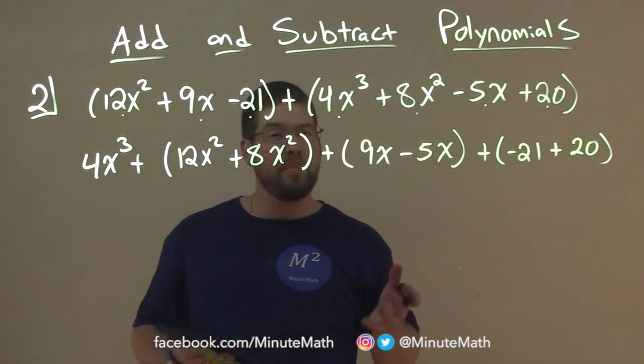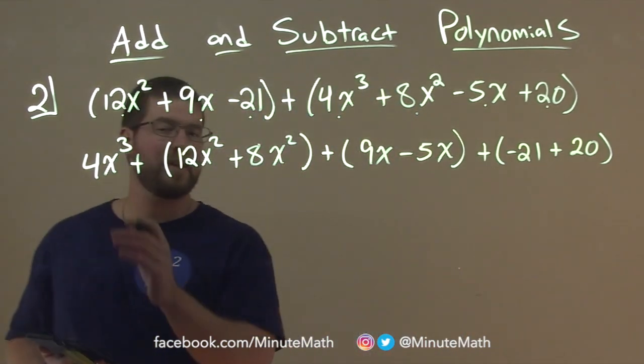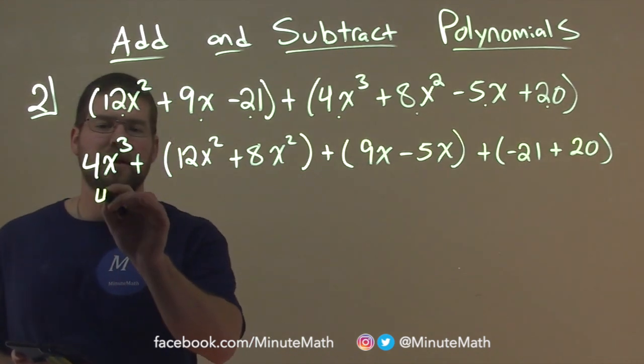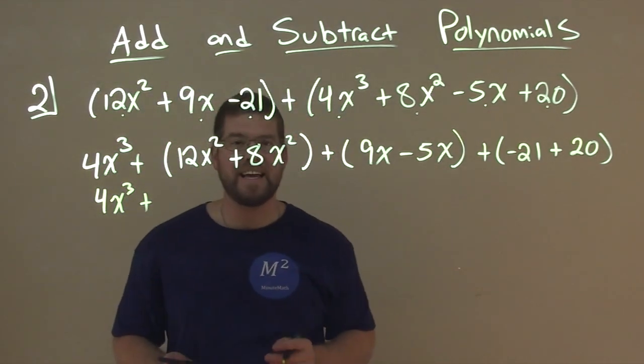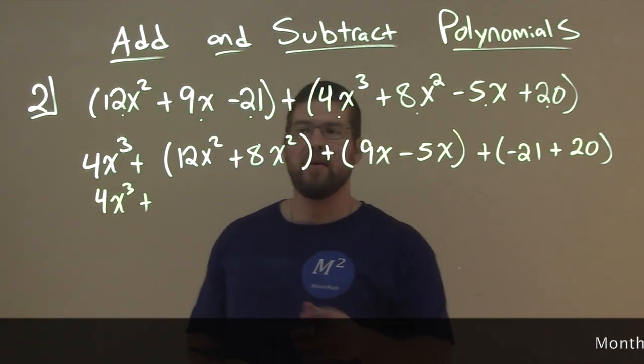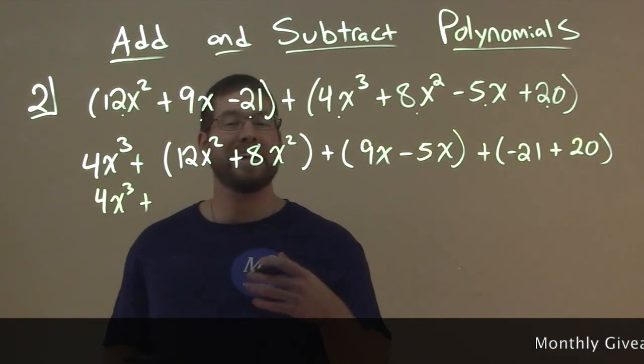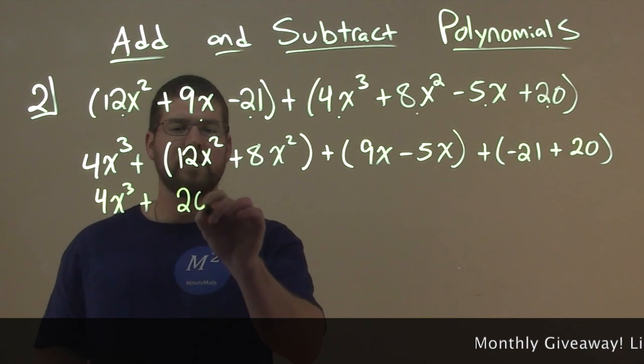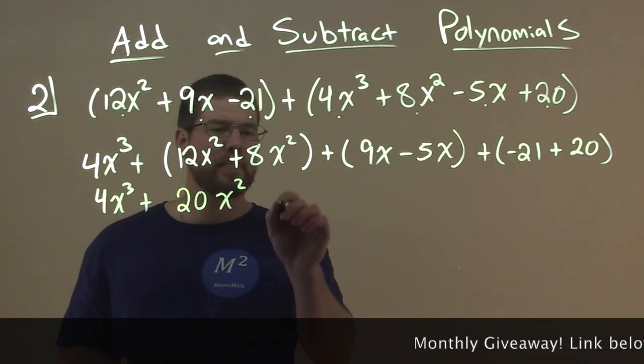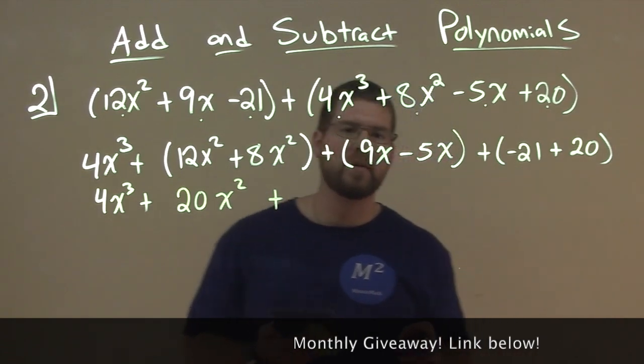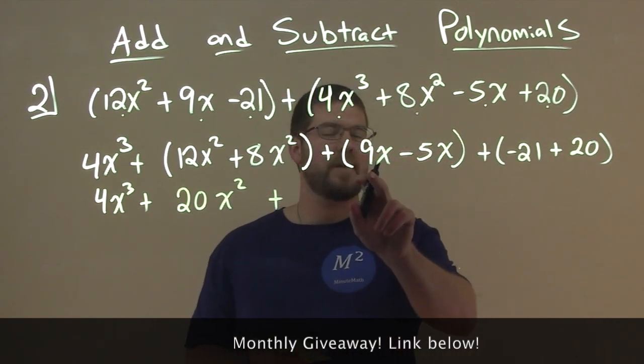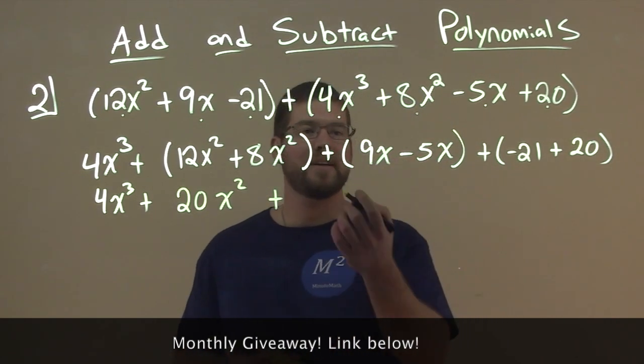Now let's simplify. We just combine our like terms here. There's nothing to combine with 4x to the third, so we have 4x to the third right here. Now 12x squared plus 8x squared, they come together. We add the coefficients. 12 and 8 is 20, so we have 20x squared here. Plus we have 9x minus 5x. Again, the coefficients, adding our like terms, 9 minus 5 is 4, so we have a 4x here.